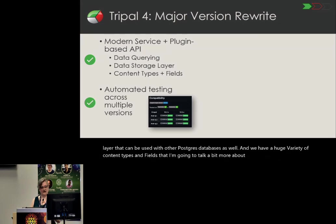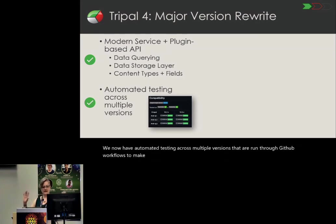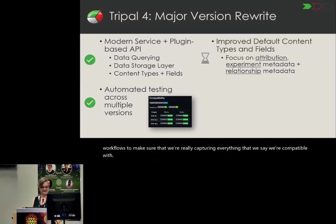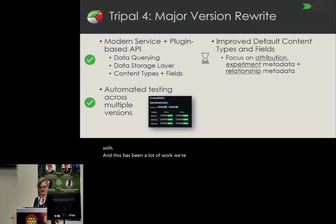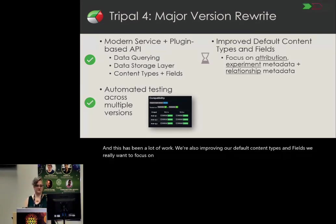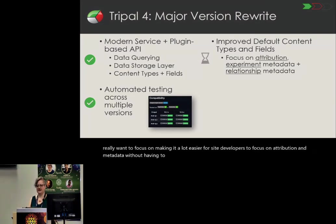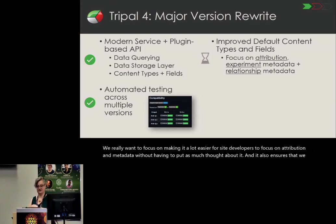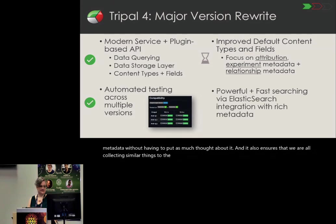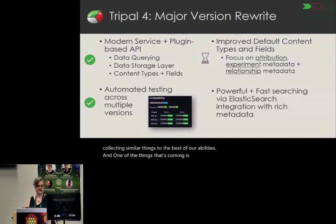We now have automated testing across multiple versions run through GitHub workflows to make sure we're capturing everything we say we're compatible with. We're also improving our default content types and fields, really focusing on making it easier for site developers to focus on attribution and metadata. And one of the things that's coming is powerful and fast searching via Elasticsearch with rich metadata integration.